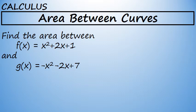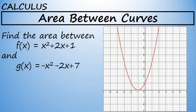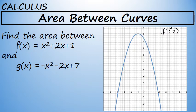We'll begin by looking at the graphs of these two functions. Here is the graph of f of x equals x squared plus 2x plus 1 — it's a parabola facing up. The graph of g of x equals negative x squared minus 2x plus 7 is pictured here in blue. It's also a parabola, facing down due to the negative in front of the x squared term.